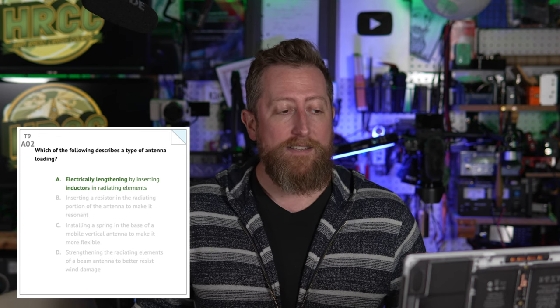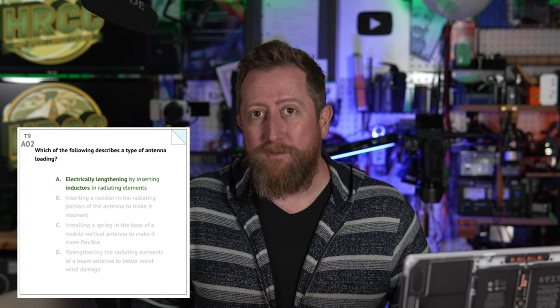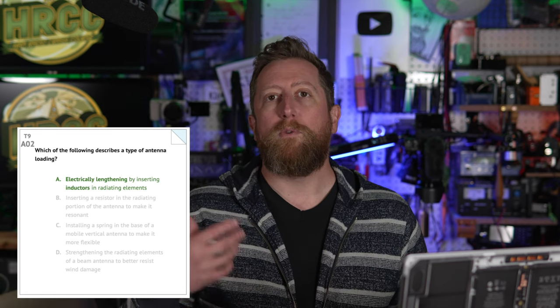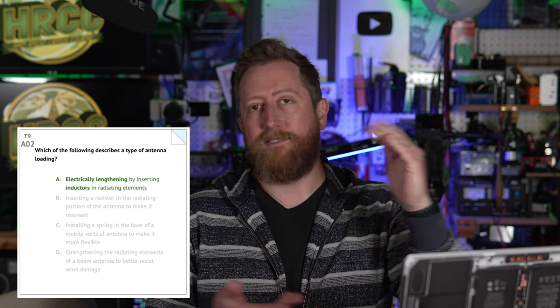Alpha 02: Which of the following describes a type of antenna loading? The answer is A — electrically lengthening by inserting inductors in radiating elements. An inductor is a coil of wire. If I had a car and wanted to get on 40 meters, I'd need a really long vertical antenna. So instead, we add an inductor — a coil of wire — to physically shorten the antenna while keeping its electrical length full. That's what we usually do for mobile or portable applications.